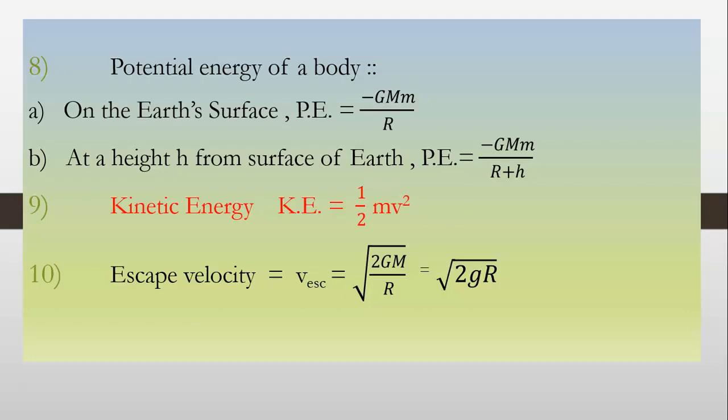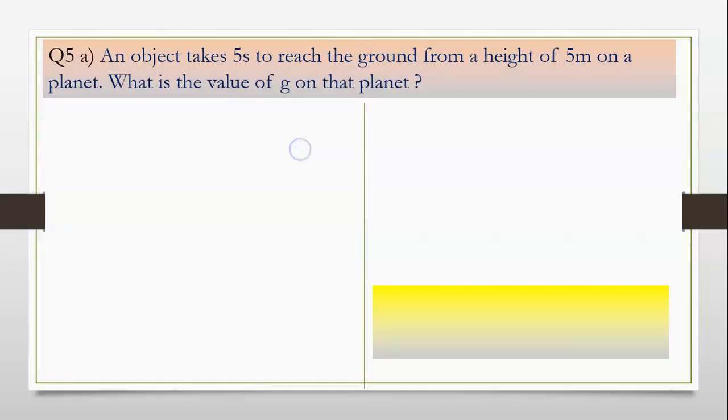Now we move towards the sums. 5a: An object takes 5 seconds to reach the ground from a height of 5 meter on a planet. What is the value of g on that planet? Students, whenever we do any numericals, there are 5 parts to be taken care of.